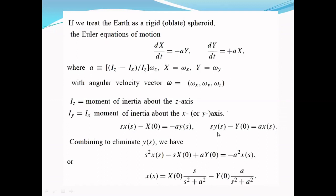From the second equation, we have Y(s) = [aX(s) + Y(0)]/s. Substituting the value of Y(s) in the first equation.